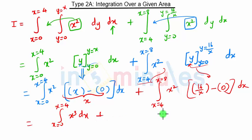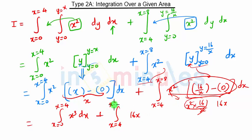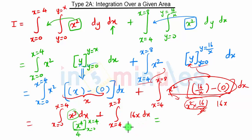For R2, the upper limit minus lower limit gives 16 by x minus 0, which is 16 by x. Then x squared into 16 by x gives 16x. So the whole term becomes the integration from x equal to 4 to 8 of 16x dx. The integration of x cubed is x raised to 4 upon 4, and 16 is constant so it comes out, with integration of x being x squared upon 2.